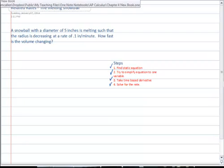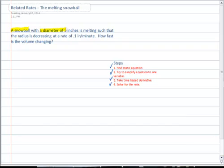I'll highlight it as I read it. We have a snowball with a diameter of 5 inches. It's melting such that the radius is decreasing. It's decreasing at a rate of 0.1 inches per minute. How fast is the volume changing?